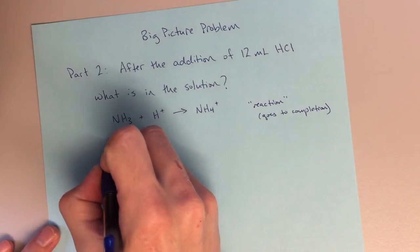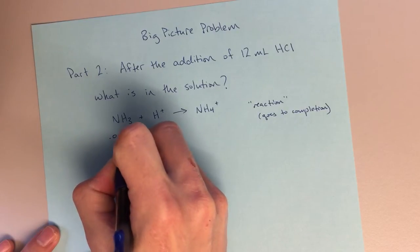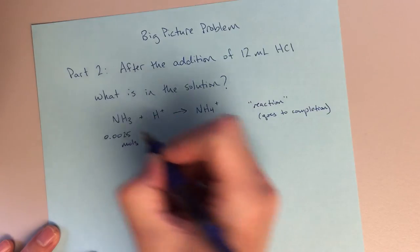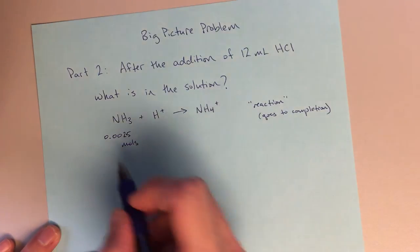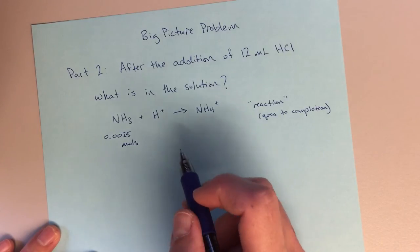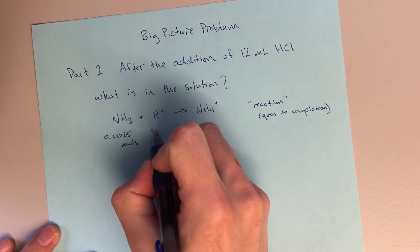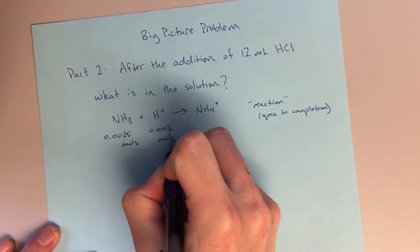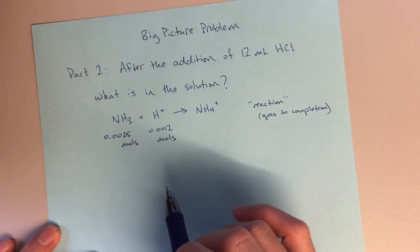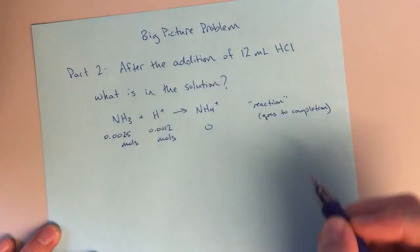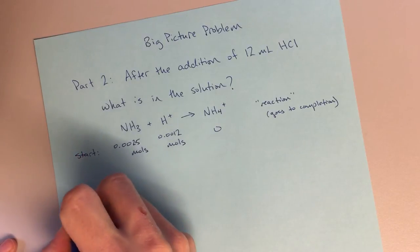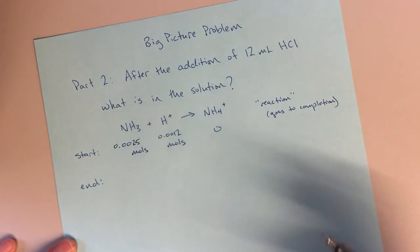So the first thing I'm going to do is figure out how many moles of my reagents I am going to start with. For NH3, that's 0.0025 moles. And whenever I'm doing this limiting reactant stoichiometry thing, I'm going to be using moles instead of molarity. And after I've added 12 milliliters of HCl, that will be 0.0012 moles. And I start with 0 NH4. So this could be our start and end table, right? Limiting reactant stoichiometry.